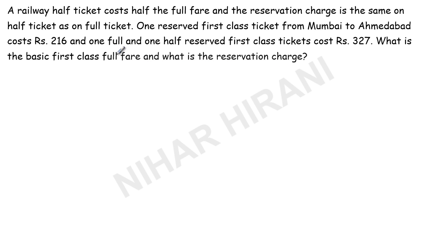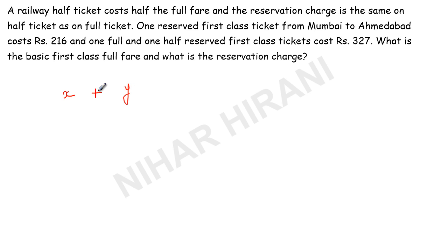So here we have the reservation charge, and that is fixed. Let us say reservation charge is y and ticket price is x. Now if we buy one reserved ticket, then we will pay x for the ticket price and y for the reservation. So x plus y equals 216.